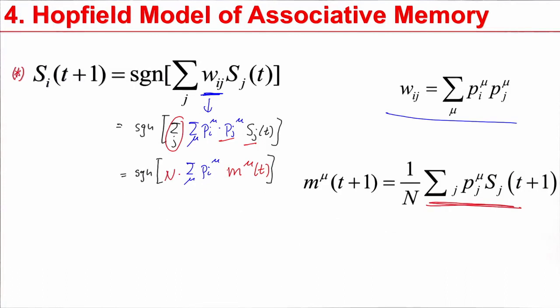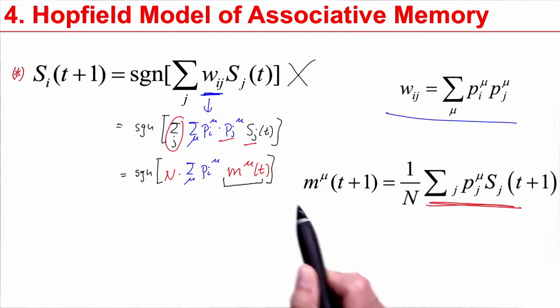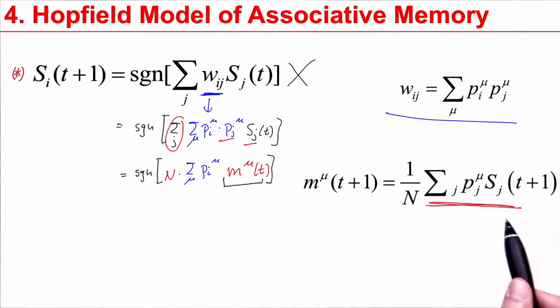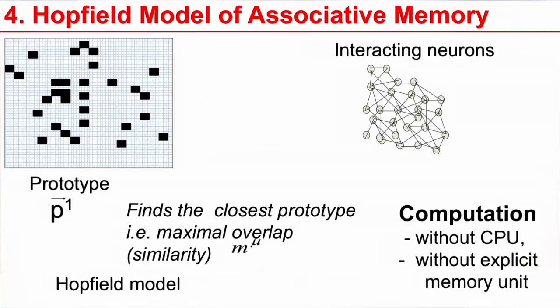Let's look at this. We started with an equation which just said I have interacting neurons. Now, it turns out that with the weights we have put in, these neurons actually calculate an overlap measure, which is the similarity between the current state and one of the stored patterns mu. In fact, I sum over mu, so the similarity with all the different stored patterns is taken into account. As a first step, we see that just interacting neurons, no central controller, allows to implement the calculation of a similarity measure. Then, as we will see in a minute, it will pull out the closest prototype.